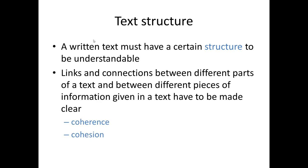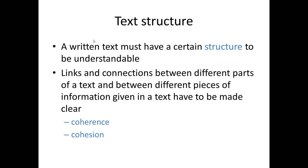This means that the links and connections between different parts of a text and between different pieces of information given in a text have to be made clear to the person reading the text. We talk about two types of structuring devices which we use to achieve this: coherence and cohesion.